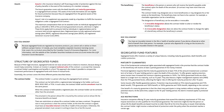Structure of segregated funds. Because of their legal structure, segregated funds do not issue actual units or shares to investors because doing so would imply ownership. Instead, an investor is assigned notional units of the contract — a concept that measures a contract holder's participation and benefit in a fund. This approach also makes it possible to compare the investment performance of segregated funds with those of mutual funds. Essentially, the contract covers three different parties.